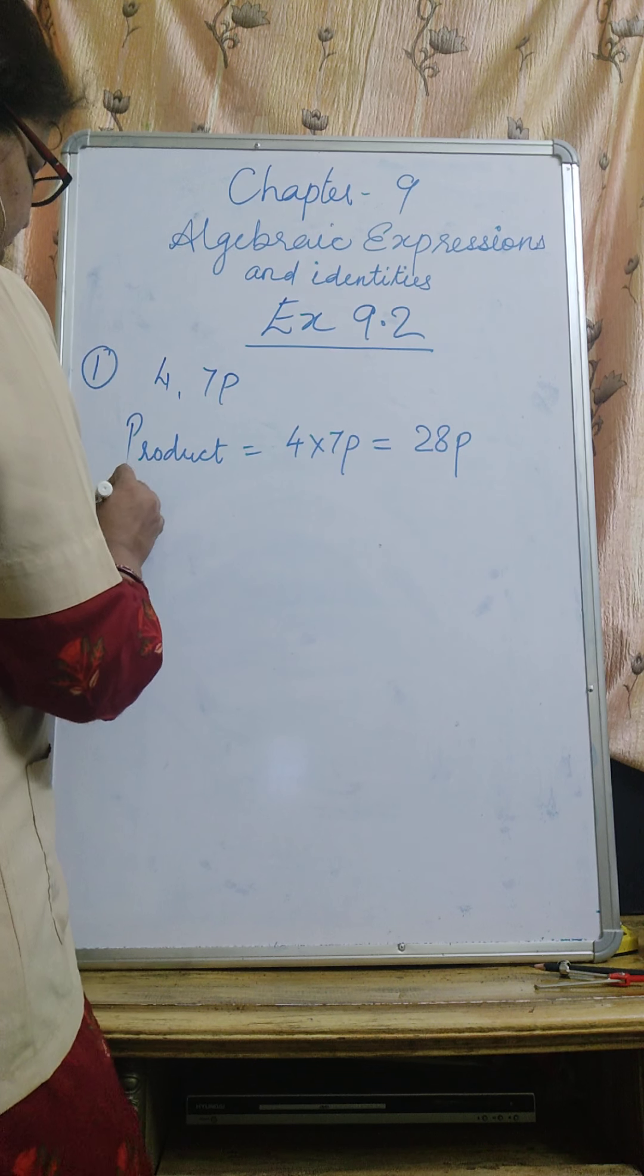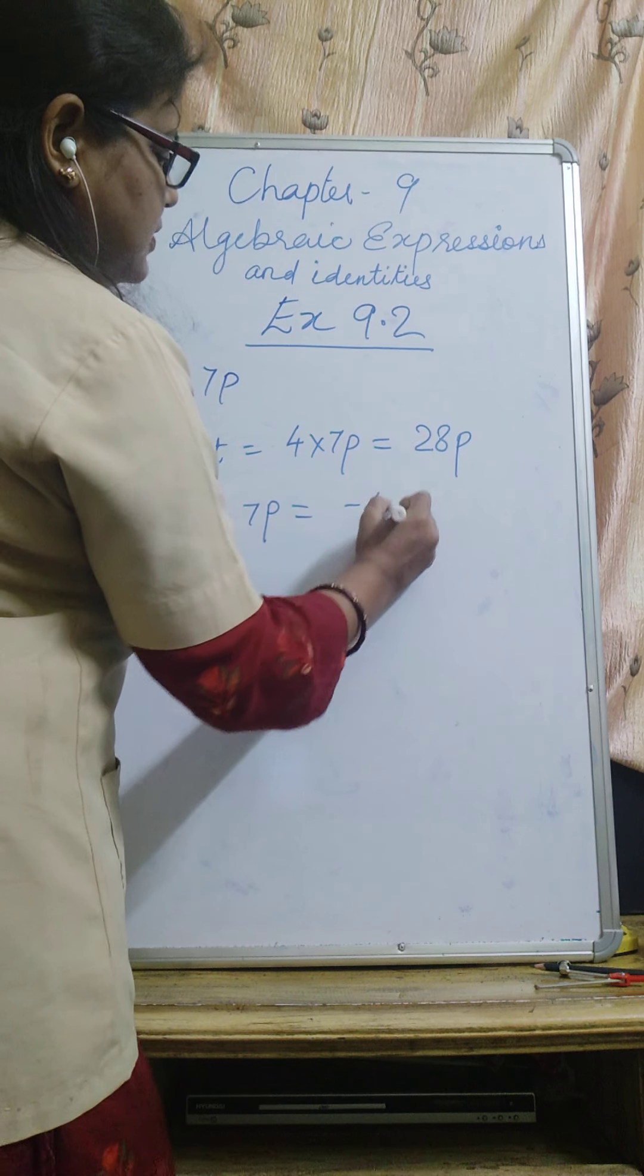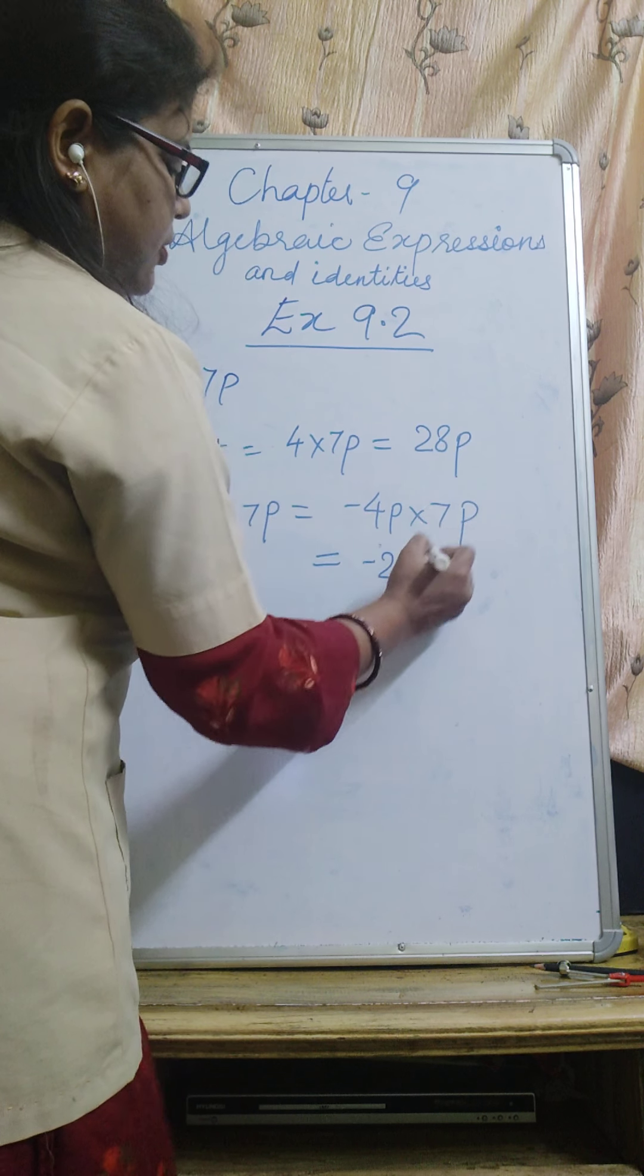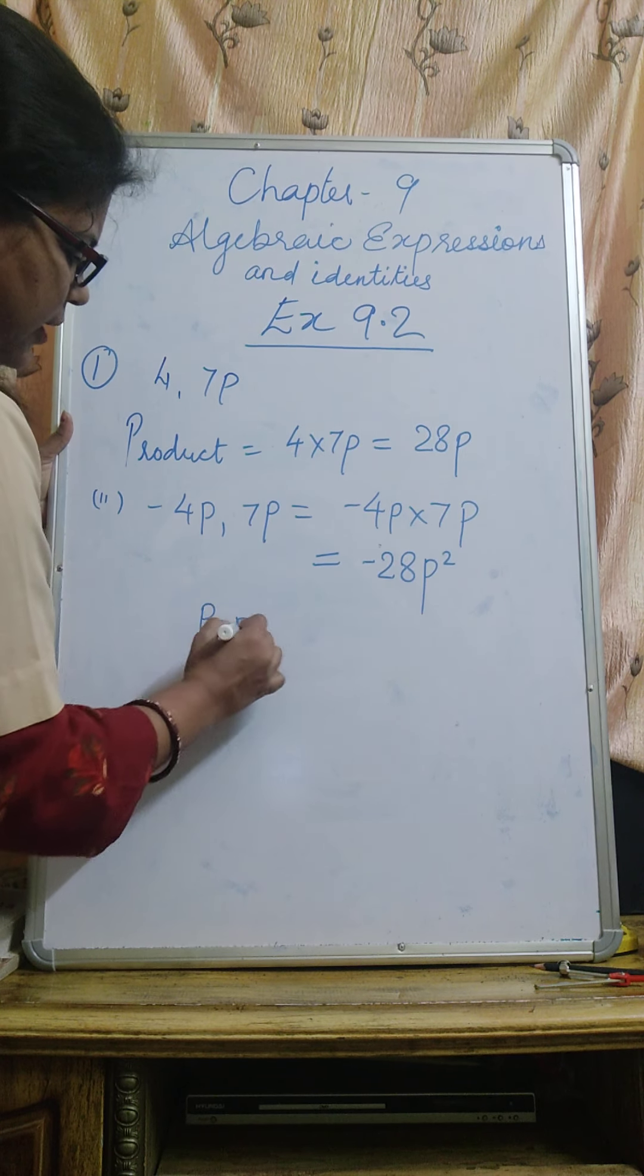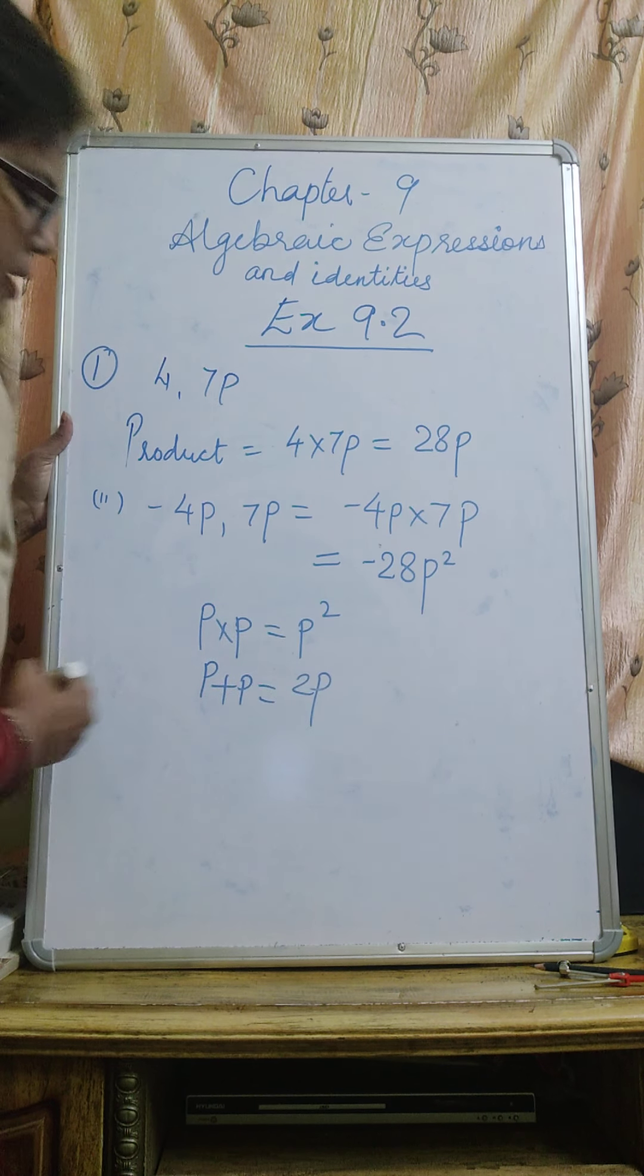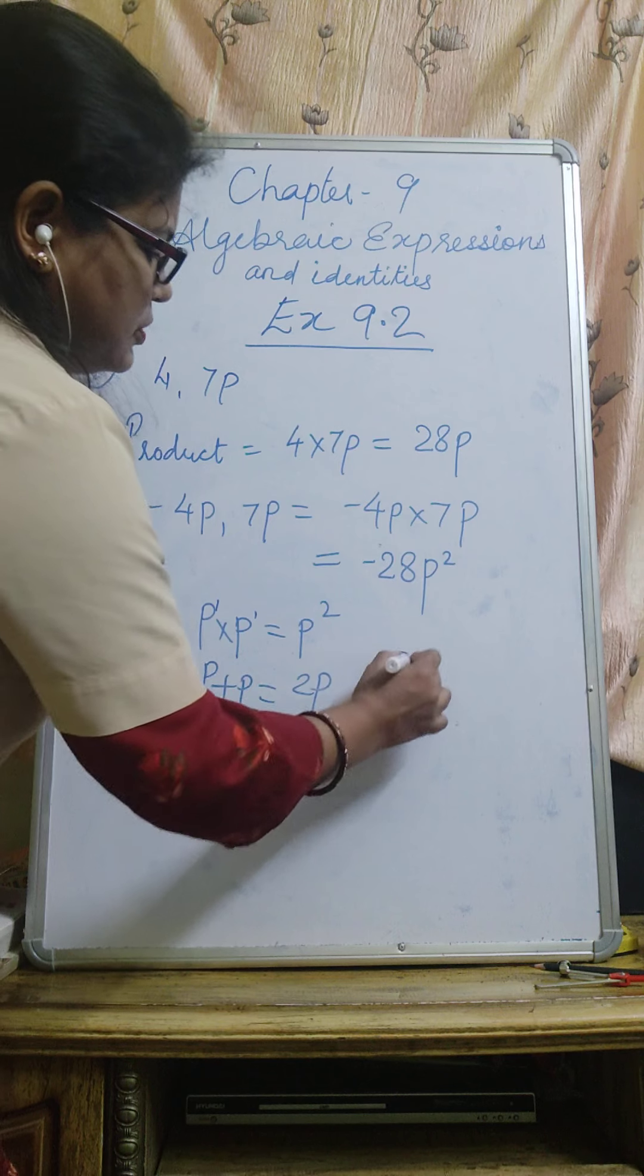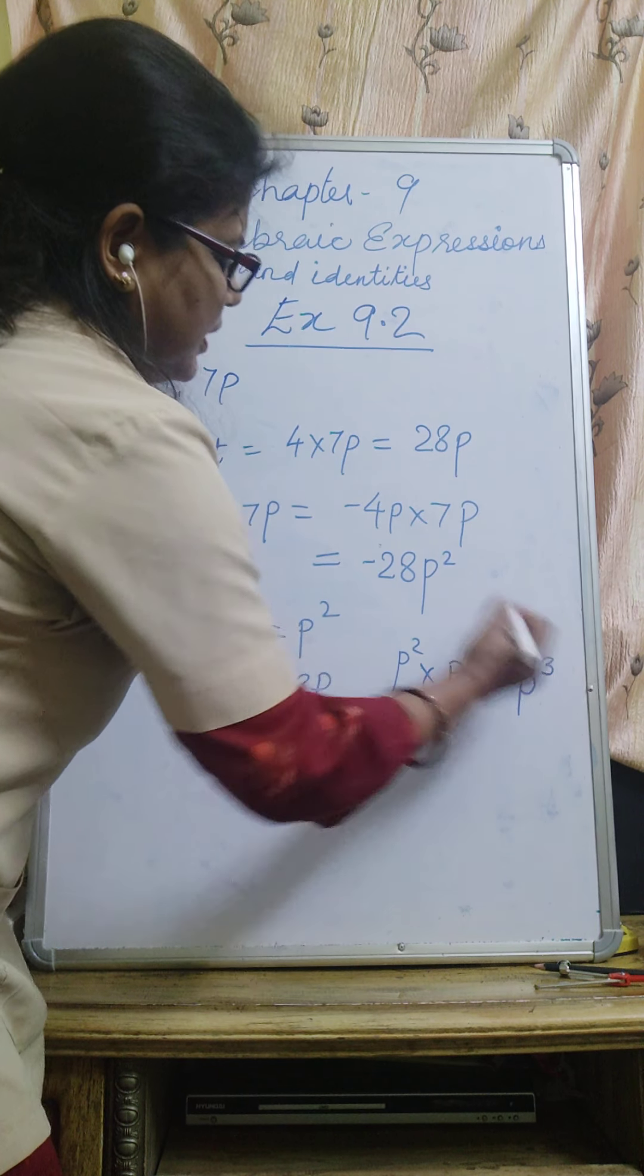Second one is minus 4P and 7P, means minus 4P into 7P. Minus 4 into 7 is minus 28, P into P is P square. Because P into P will become P square. If there is multiplication, the powers are added. Suppose P square into P, it will become P cube.